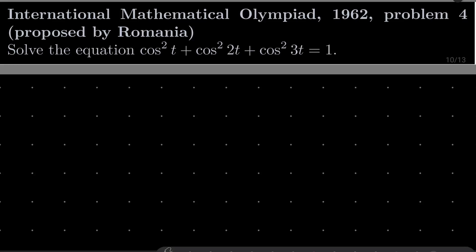Hello friends! In this video I would like to solve the following problem from the International Mathematical Olympiad 1962, problem number 4, which was proposed by Romania. We wish to solve the following trigonometric equation: cosine squared of t plus cosine squared of 2t plus cosine squared of 3t equals 1.